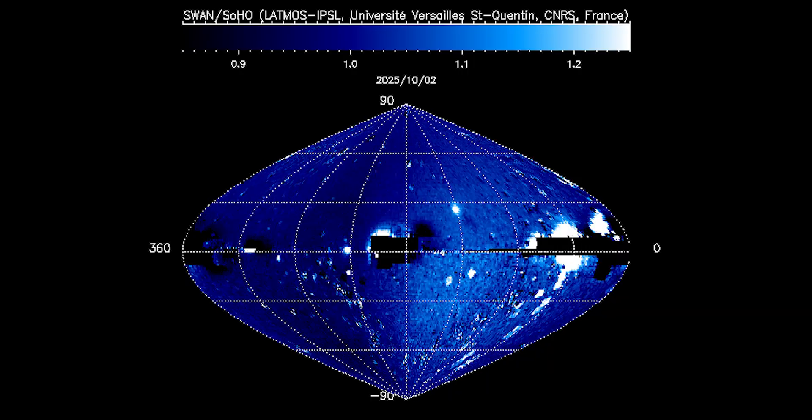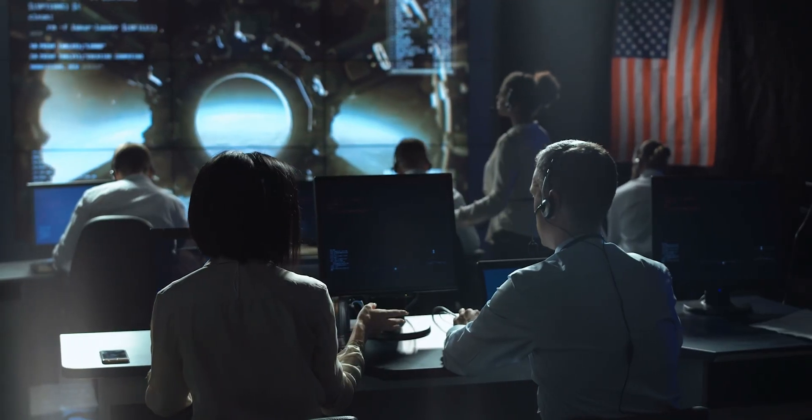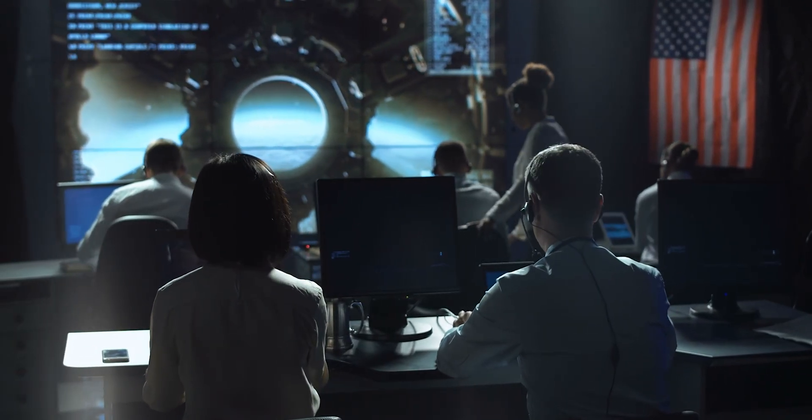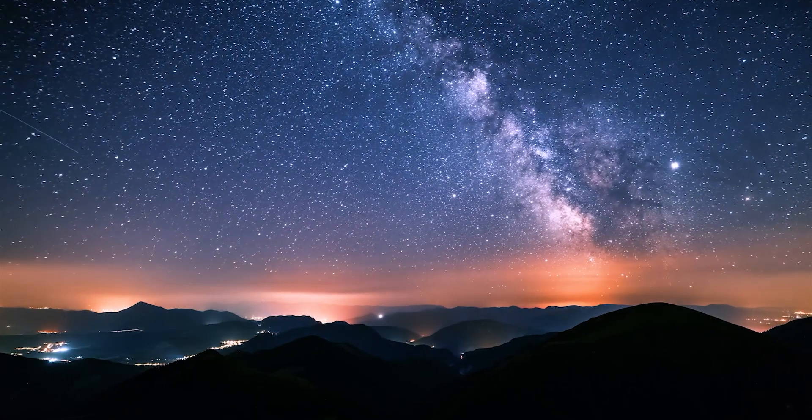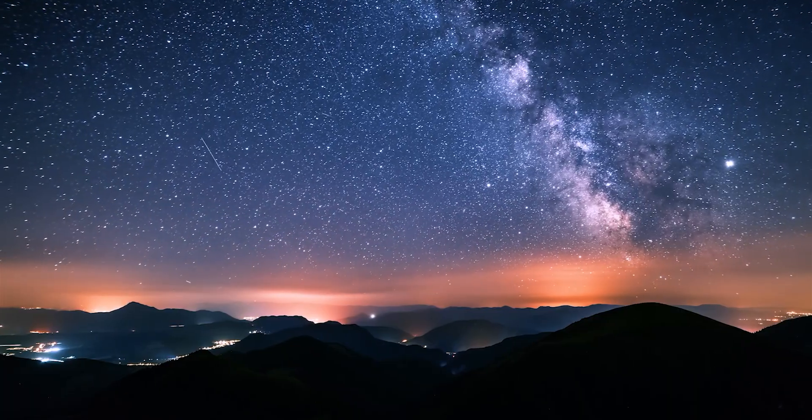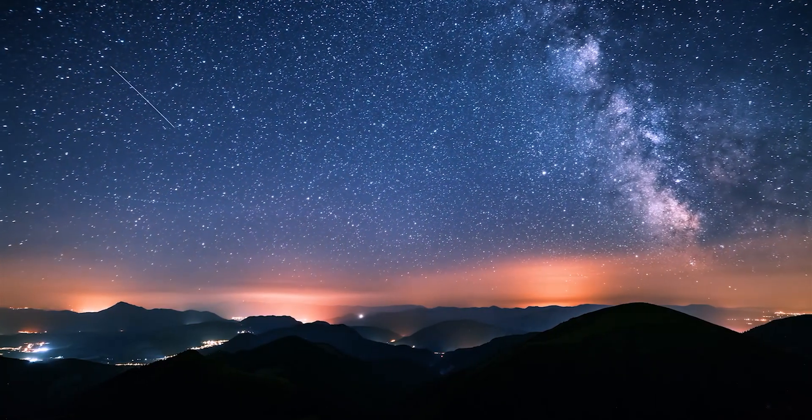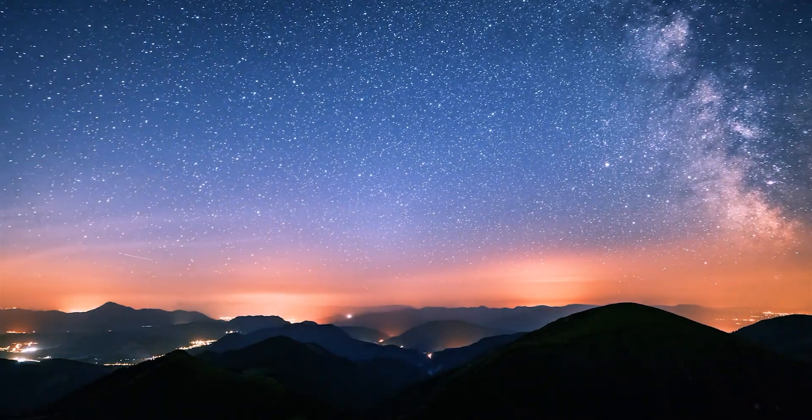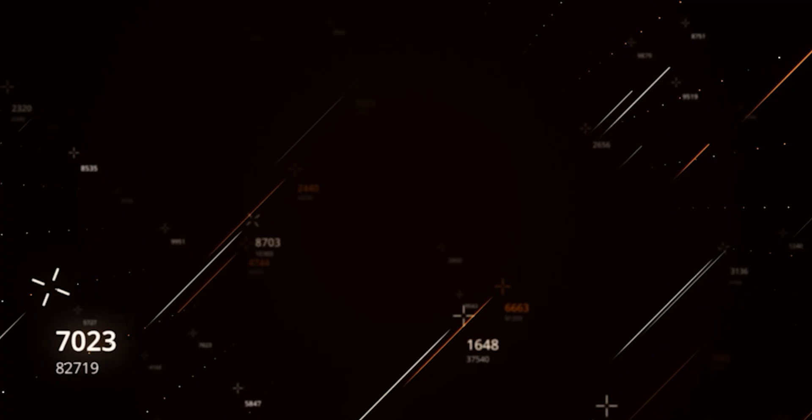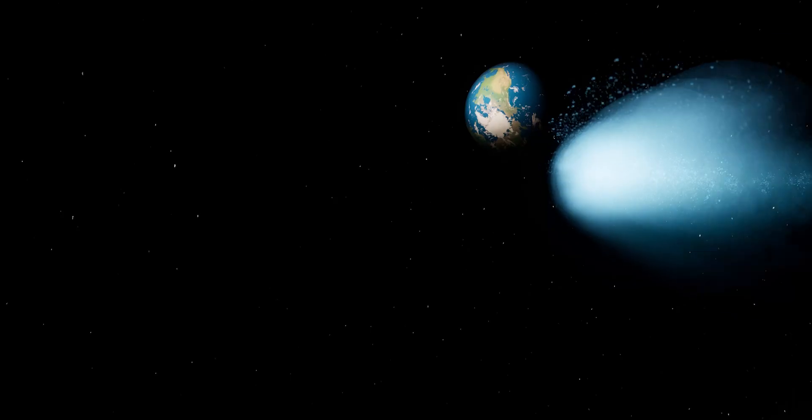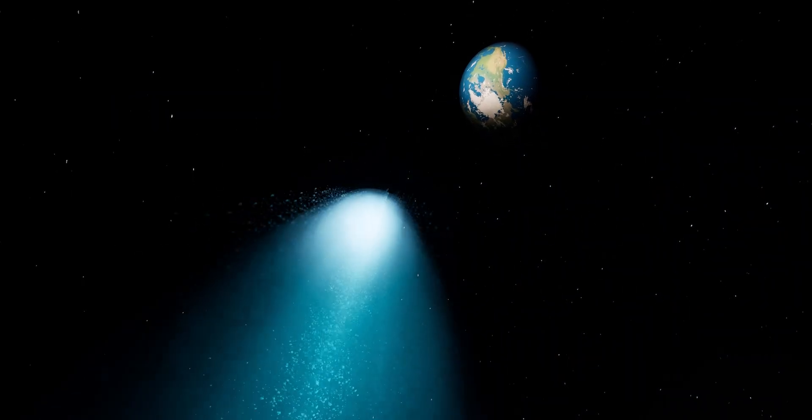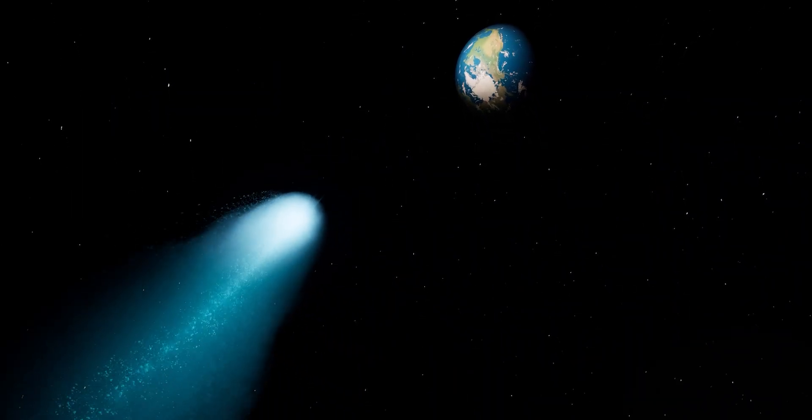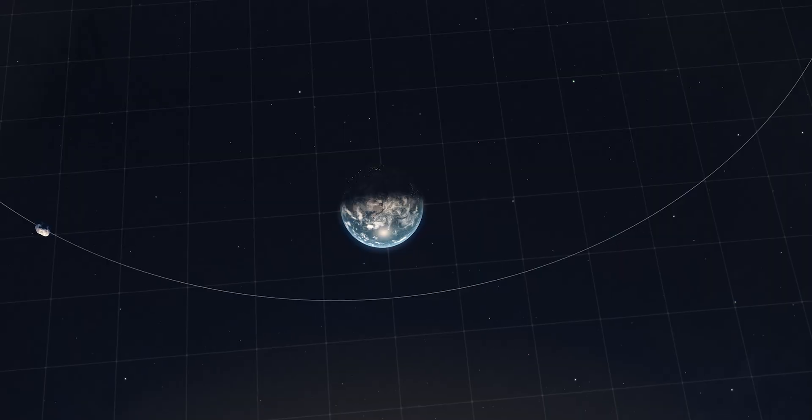That delay wasn't malicious. It was procedural. And it revealed how fragile our situational awareness truly is. We can map planets around other stars. But we can still miss a 100-billion-ton comet crossing our orbit because it arrives from the wrong direction. For planetary defense researchers, SWAN's late discovery isn't just a fluke. It's a warning embedded in data. A reminder that the most dangerous blind spots aren't found in space, but in our own field of view.